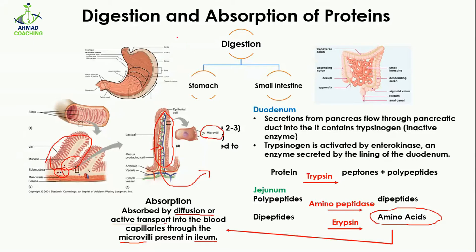In summary, the digestion of protein takes place in the stomach, the duodenum, and the jejunum, while the absorption of protein takes place in the ileum of the small intestine. That was all about the digestion and absorption of proteins. If you like this video, share it with your friends and subscribe to my channel. I will see you in the next video.